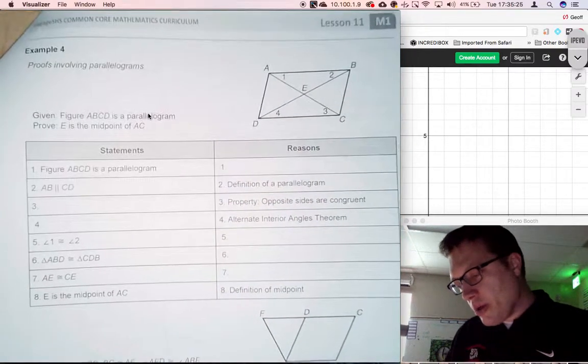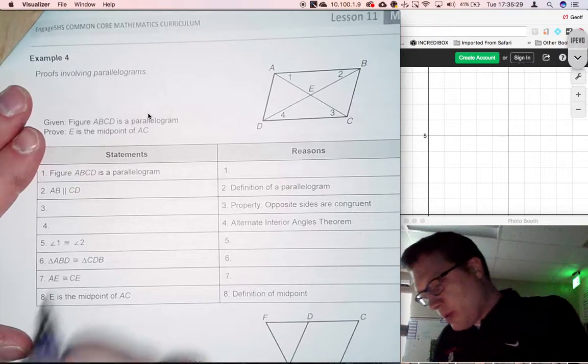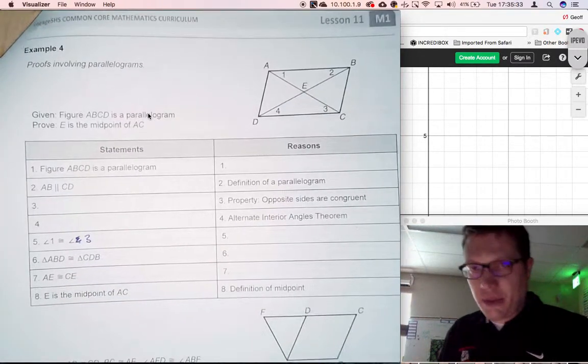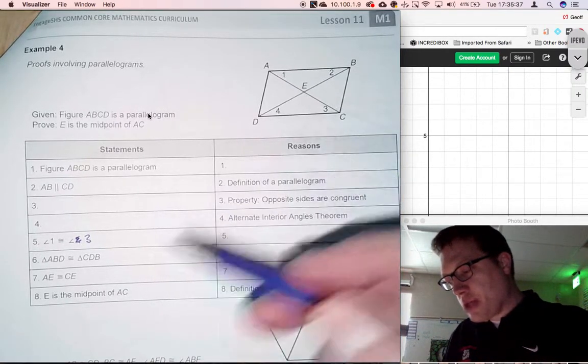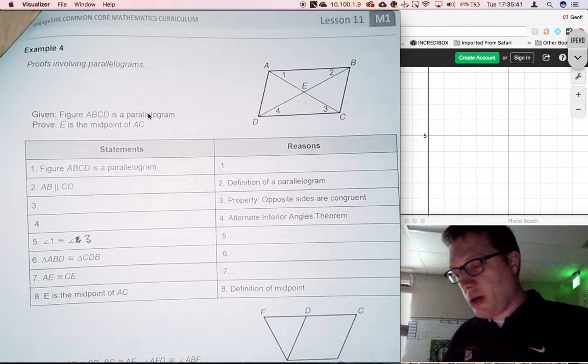As I look at this problem, I notice we need to switch number 2 with number 3—that's a typo we need to correct. From this point on, we're going to be adding information from the diagram, from what we read, and the statements and reasons in order to help set up the problem.